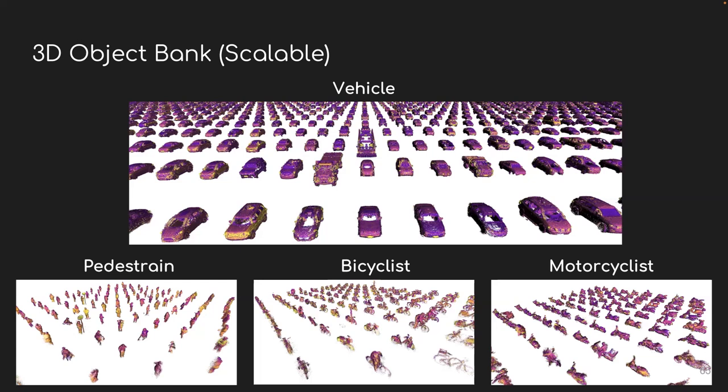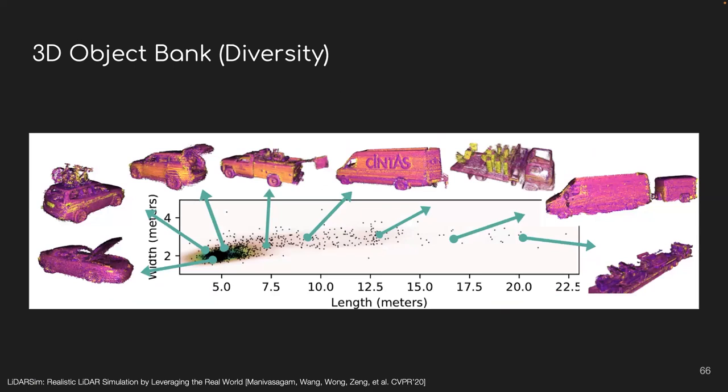Here I show a screenshot of these 3D assets and you can see we have different types of actors like vehicles, pedestrians, bicyclists, and motorcyclists. And furthermore, all these actors are really diverse. For example, we can find a lot of different edge situations in our asset bank, but typically you wouldn't see them in other 3D assets or CAD model databases.